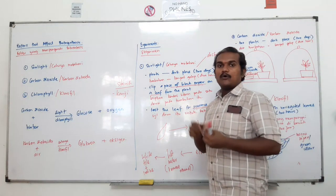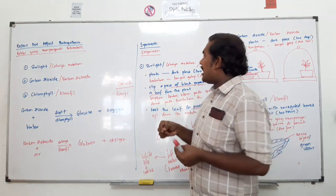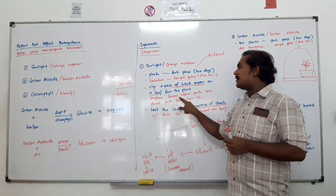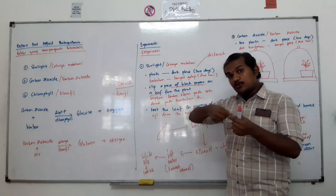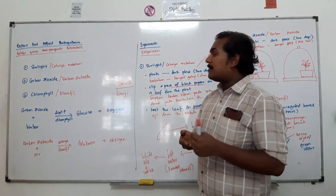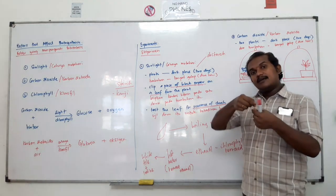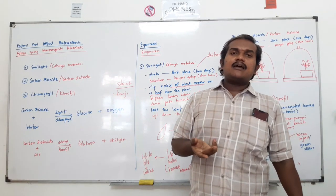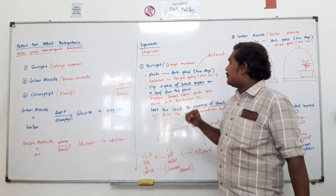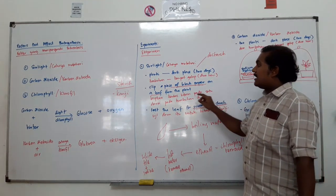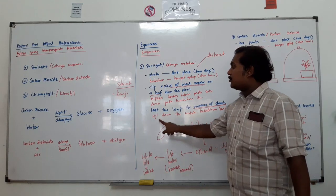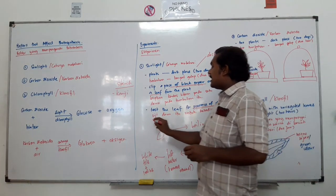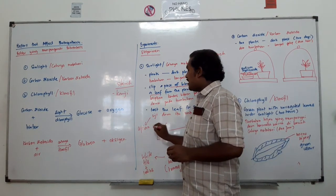Kalau kamu letakkan tumbuhan di tempat yang gelap untuk 2 hari, tumbuhan itu tidak boleh melakukan fotosintesis kerana tiada cahaya. Kita lakukan ini untuk memastikan tumbuhan tidak membuat fotosintesis, dan tumbuhan akan menggunakan kanji untuk menghasilkan tenaga. Tanpa fotosintesis, tumbuhan akan menukarkan kanji kepada glukosa untuk tenaga. Selepas 2 hari, tumbuhan tidak akan mempunyai glukosa mahupun kanji. Selepas itu, kita pilih satu daun dan klikkan dengan kertas hitam.